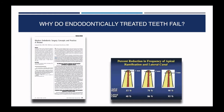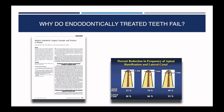Looking at surgical treatments and why we resect three millimeters or more in endodontics: with one millimeter resection we address 52% of apical ramifications, with two millimeters 78%, and with three millimeters 98%. Most failures, if not structural, relate to apical anatomy. Three millimeters of root must be removed to reduce 98% of apical ramifications and 93% of lateral canals — and that's where the laser comes into play.